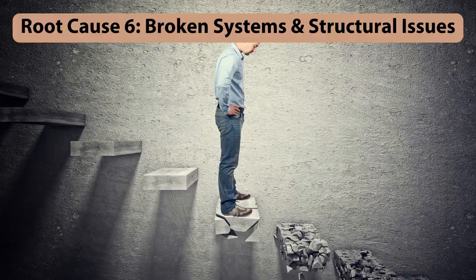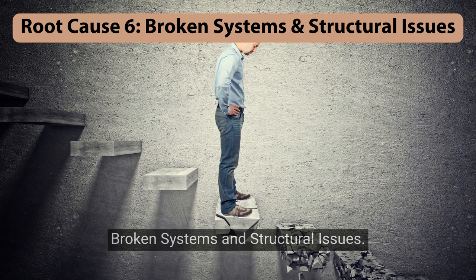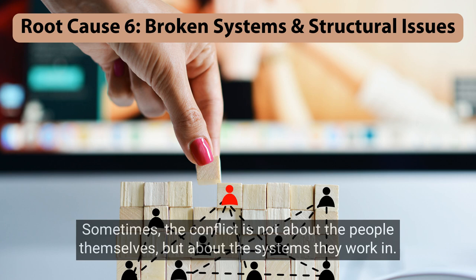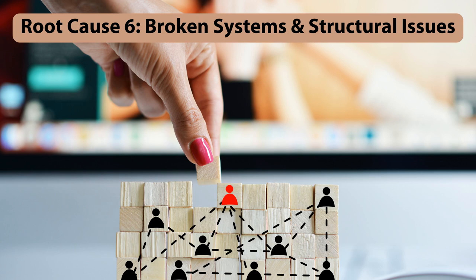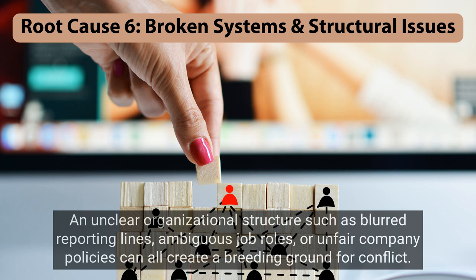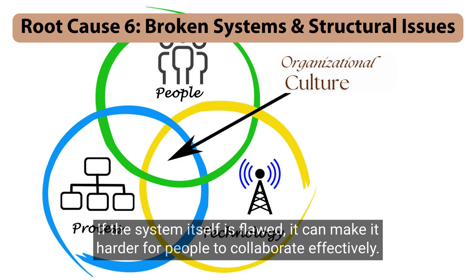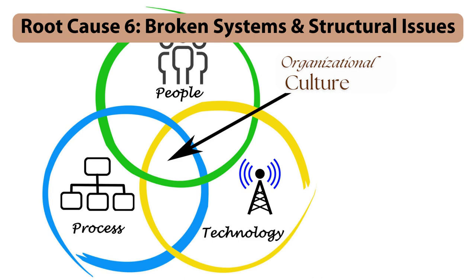Root cause 6: Broken systems and structural issues. Sometimes the conflict is not about the people themselves, but about the systems they work in. An unclear organizational structure — such as blurred reporting lines, ambiguous job roles, or unfair company policies — can create a breeding ground for conflict. When people are unsure of what is expected of them or who to turn to, conflict can easily arise.